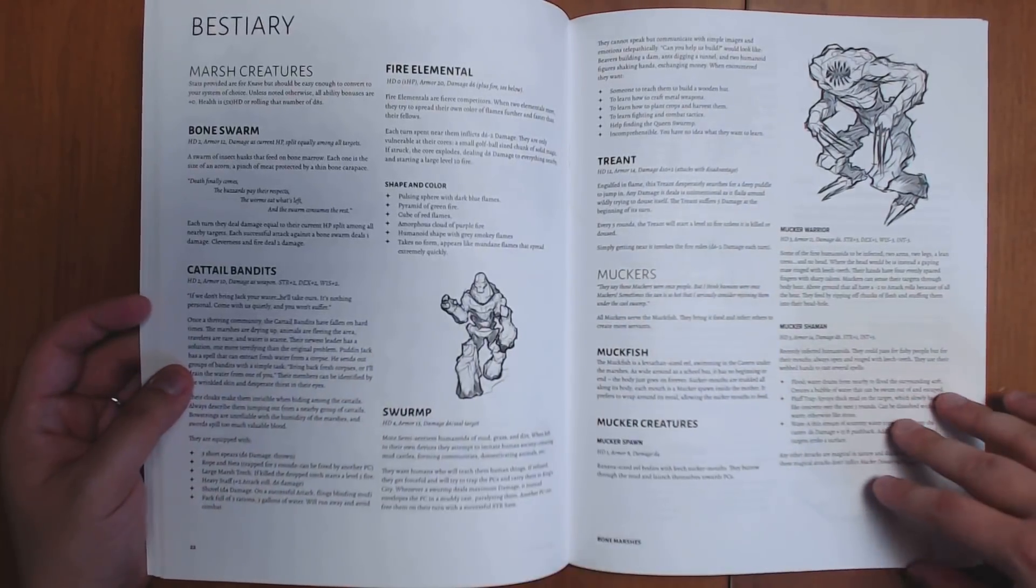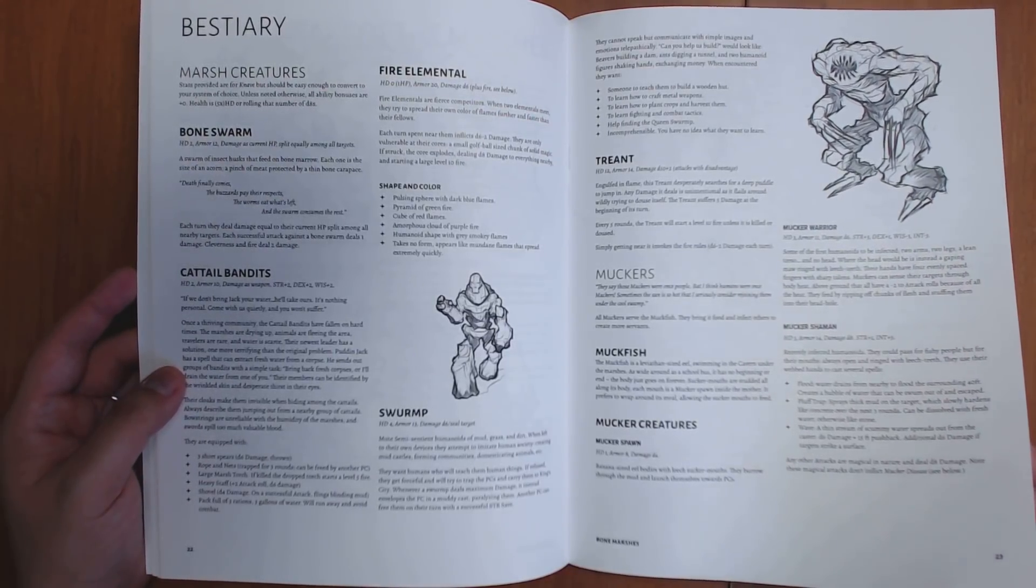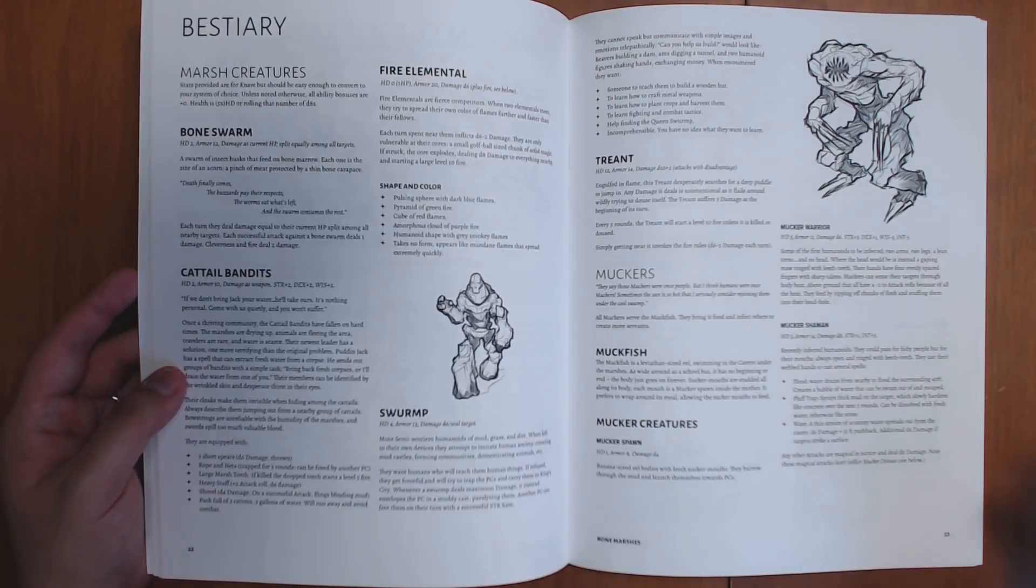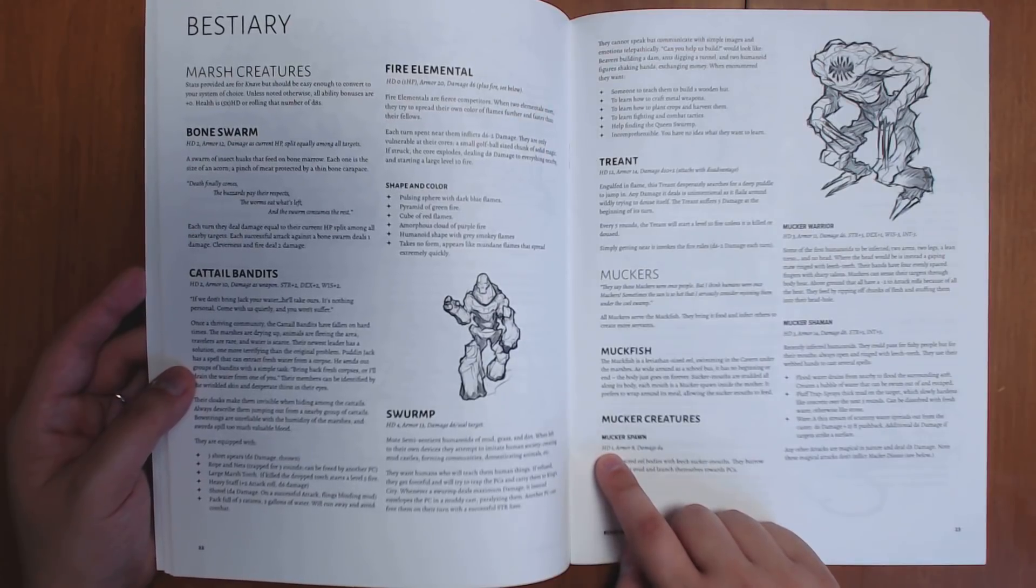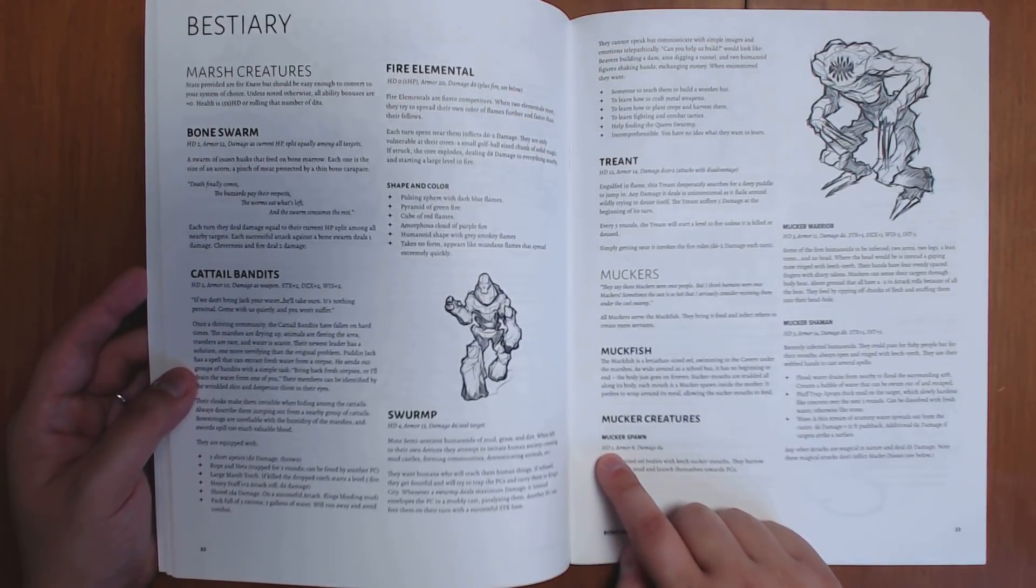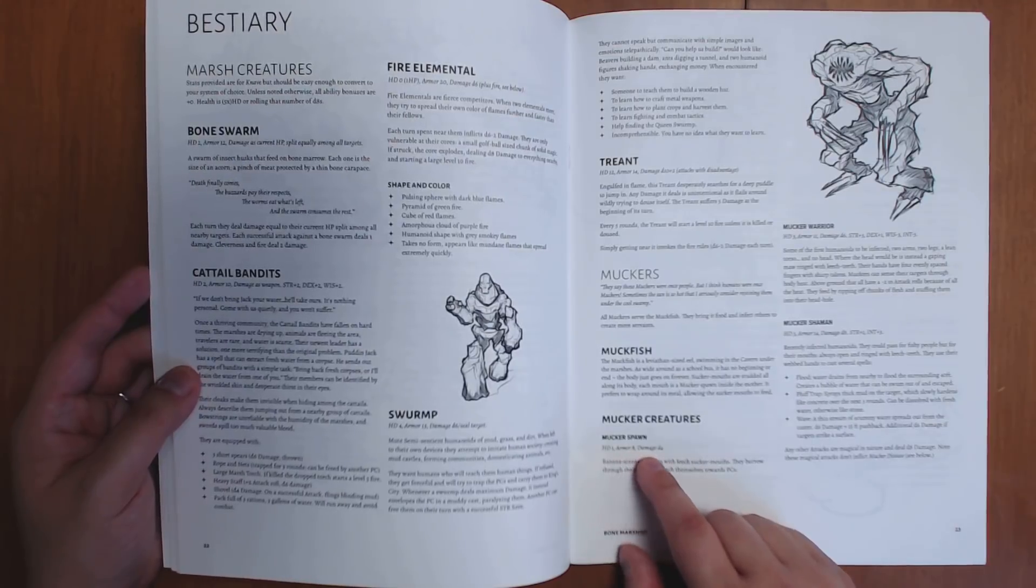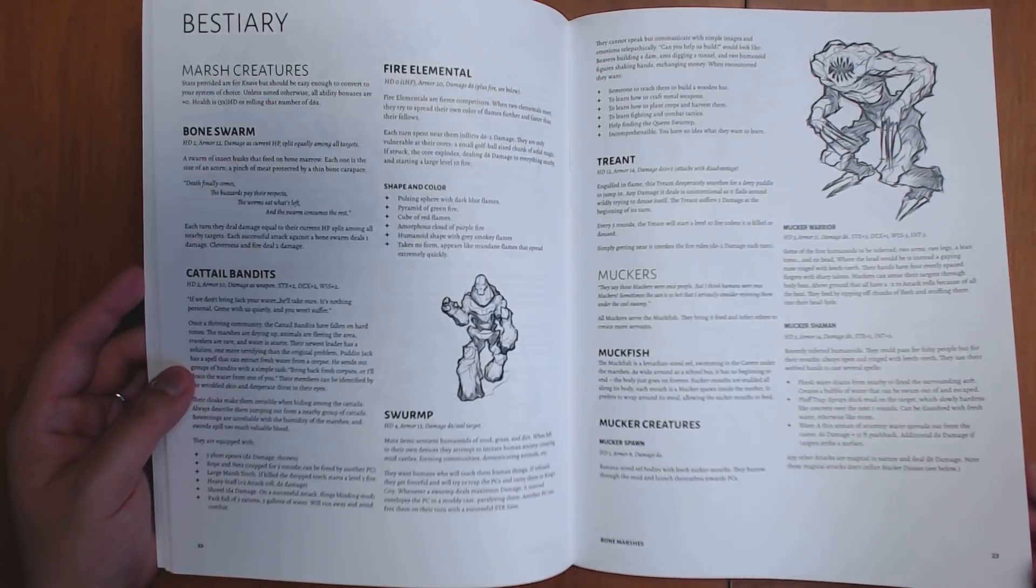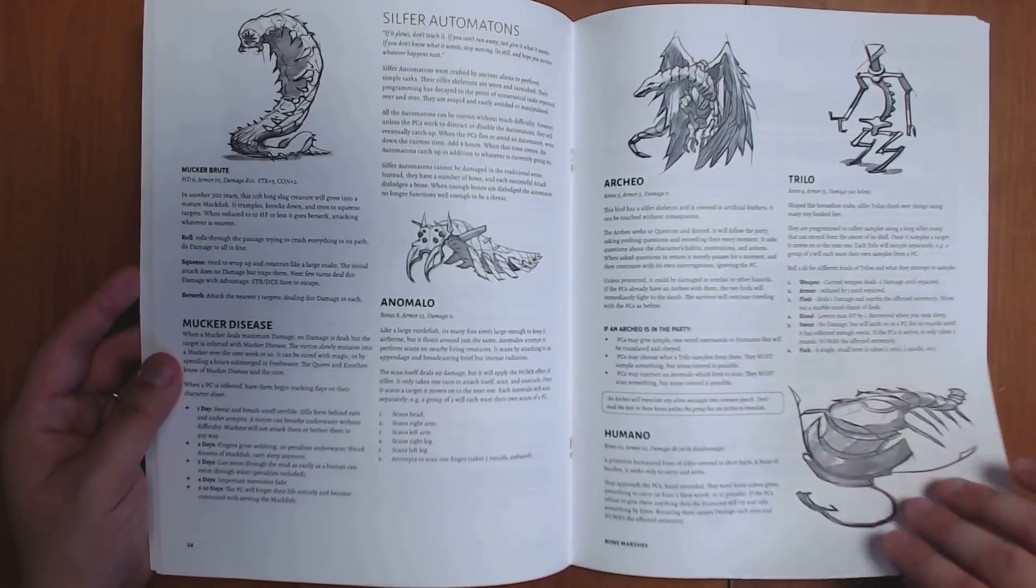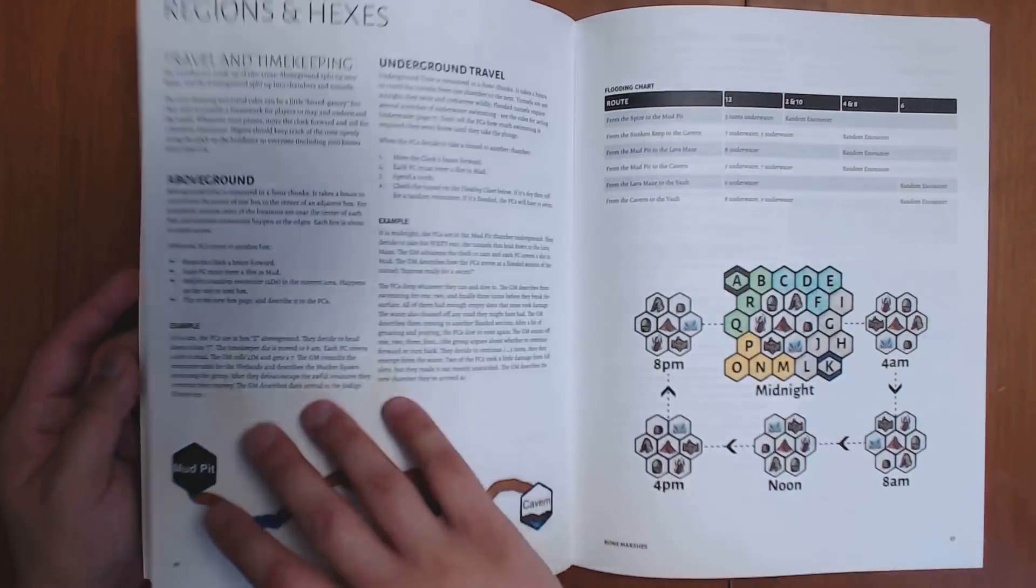We have a bestiary along with lots of new monsters. The stat blocks are very simple, as they typically are in Knave. So for example, this guy, he has one hit die, that tells you how many hit points he has. It also tells you what his attack bonus is, and a lot of his stats, to be honest. His armor rating, you basically add, that's something like his armor class, more or less, and we have a damage rating. That's all you really need to run most of these types of monsters. All of them have special abilities to go along with them, and it's nice that they all have their own little illustration.